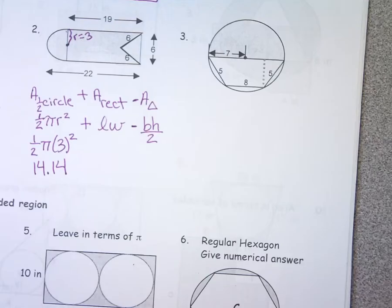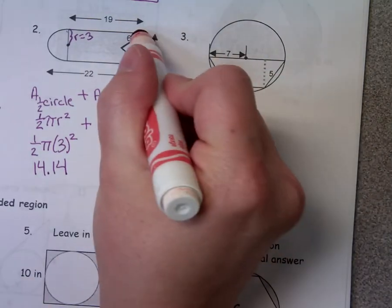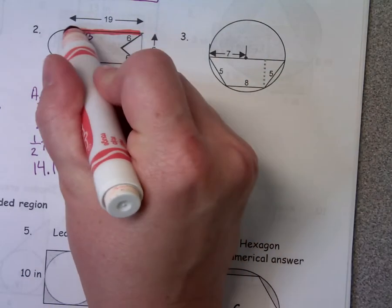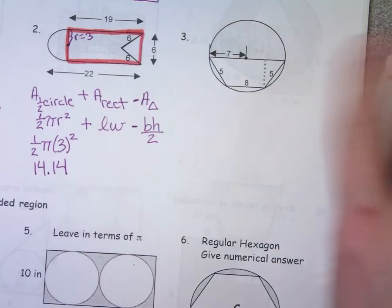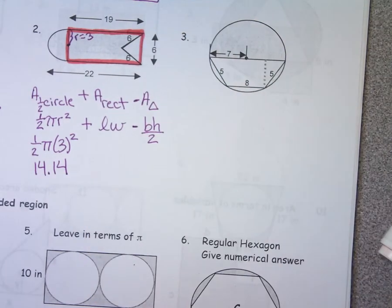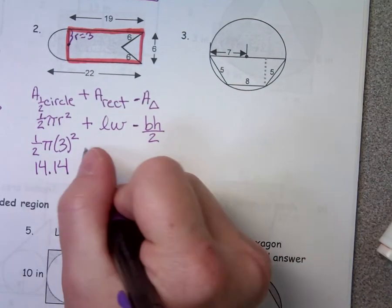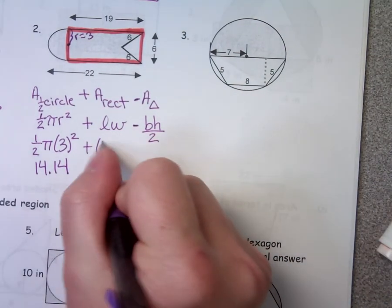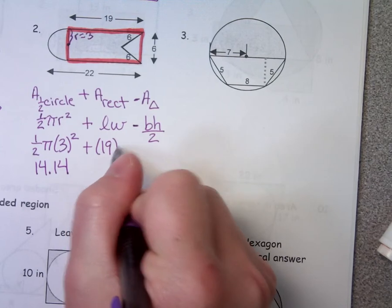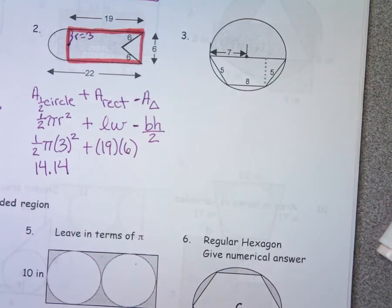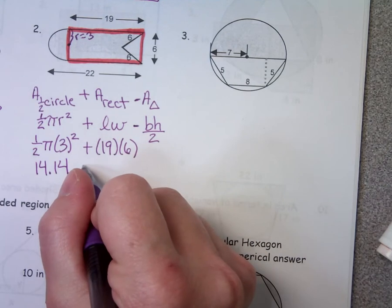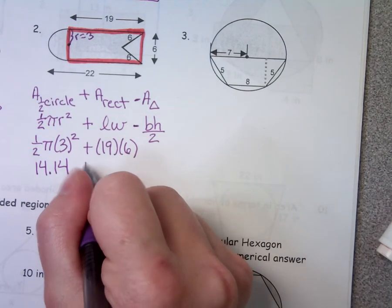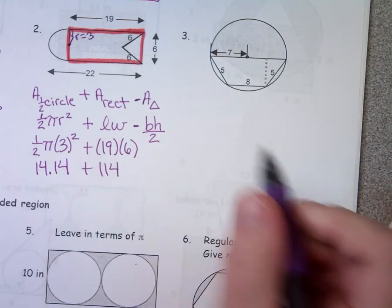Now the rectangle. If I want to find the area of the rectangle, I'm going to take the length times the width — what times what? 19 times six. Let's go ahead and take 19 times six. What do you get? 114.